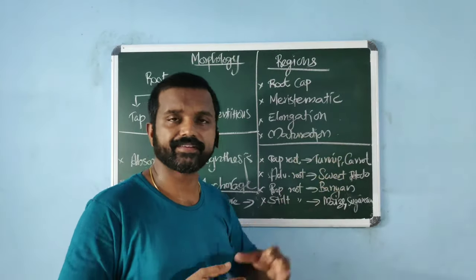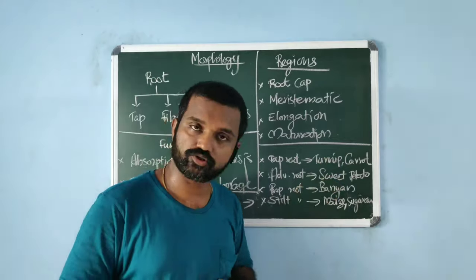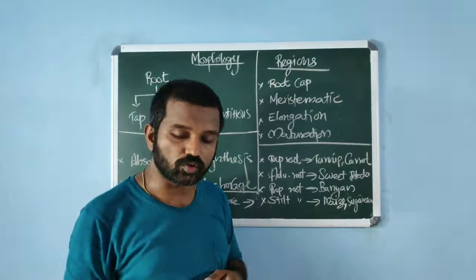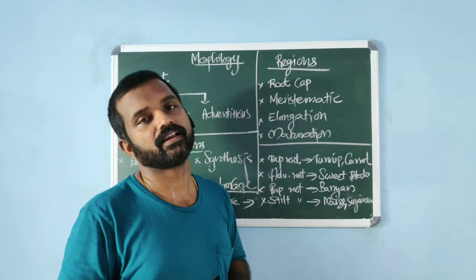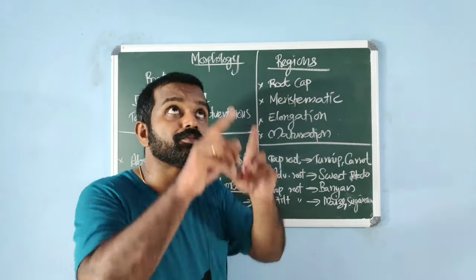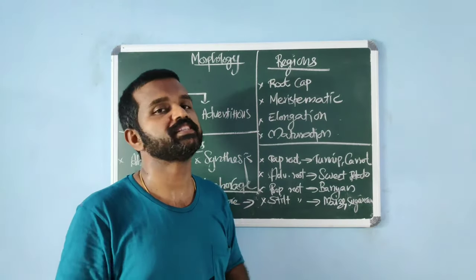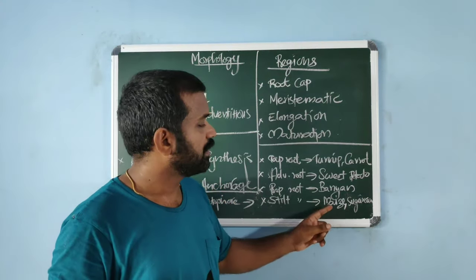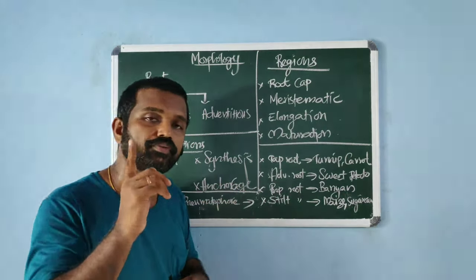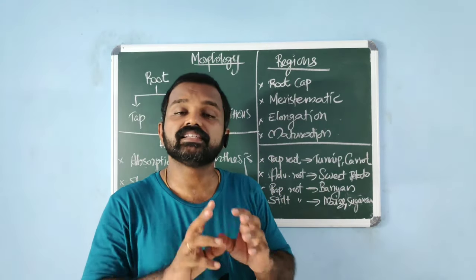Prop roots arise from aerial branches, grow downwards, and provide mechanical support; seen in banyan tree. Stilt roots arise from lower nodes on the main stem, grow downwards, and provide mechanical support; seen in maize and sugarcane. Pneumatophores are seen in mangroves — example Rhizophora. These are negatively geotropic roots that grow upward and are meant for respiration.